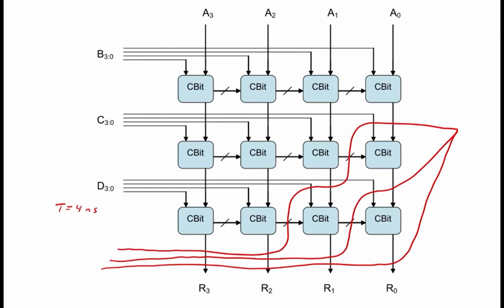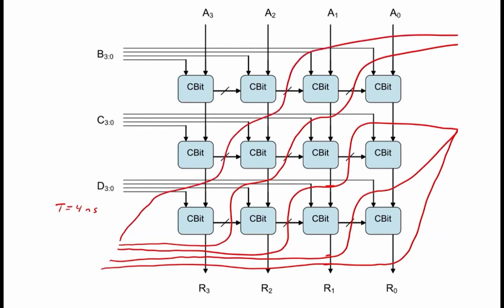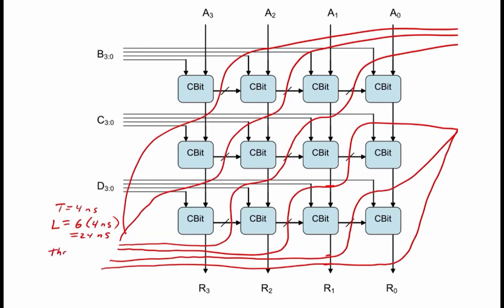Notice that, regardless of which input-to-output path you follow, at this stage you are crossing three pipeline registers. We continue pipelining our circuit in this manner until we have added enough pipeline stages so that each stage passes through a single C-bit module. Any path from input-to-output passes through six pipeline registers because we have split our circuit into six pipeline stages to break up the longest path. We can now clock this circuit with period T = 4 nanoseconds. So the latency is 6 times 4 nanoseconds, which equals 24 nanoseconds, and the throughput is 1 over 4 nanoseconds.